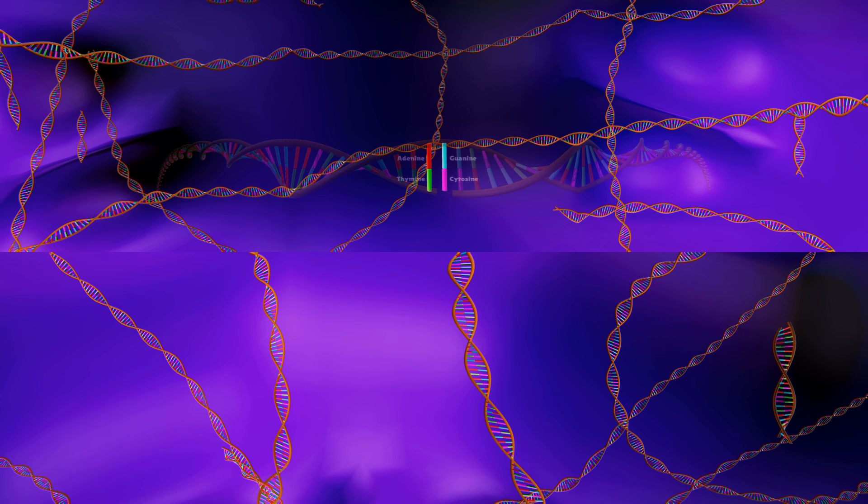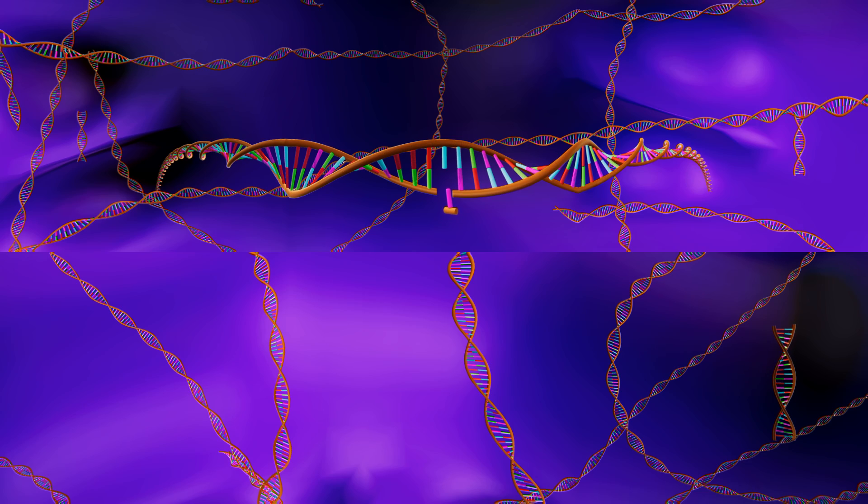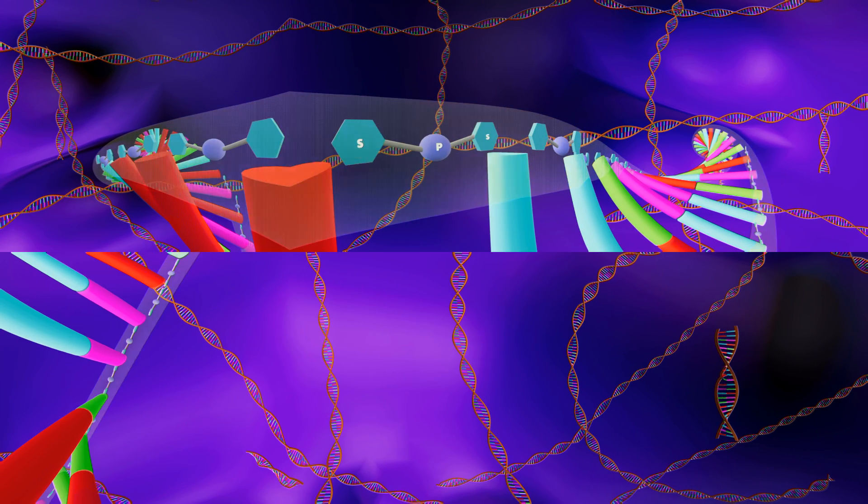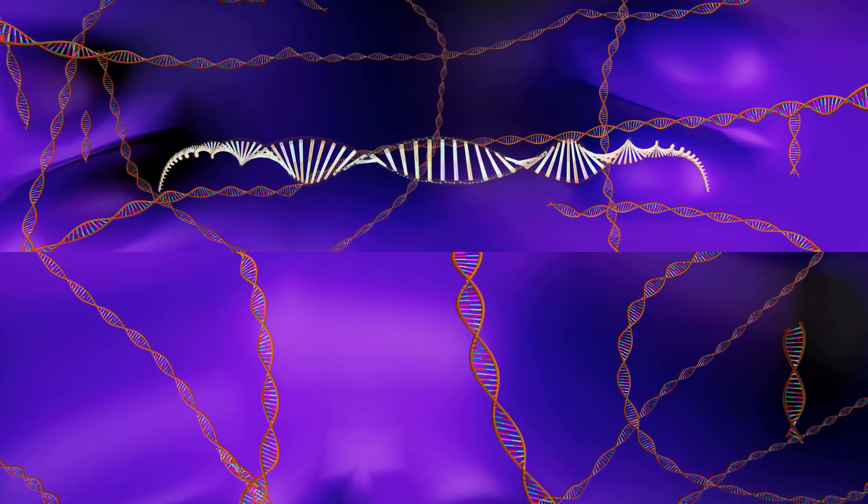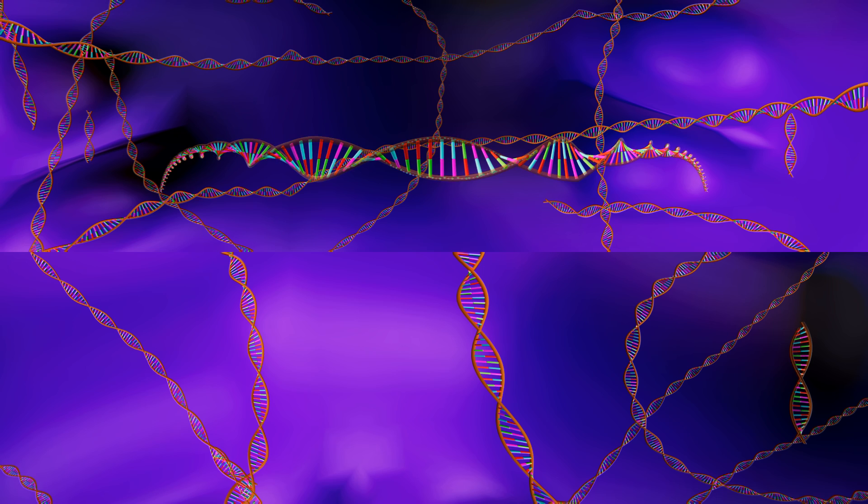When combined, each of these three parts makes a structure called a nucleotide, which is the monomer or component part of all nucleic acids. The sugar and phosphate groups make up the backbone of the ladder, and the rungs are where the nitrogen bases are located.